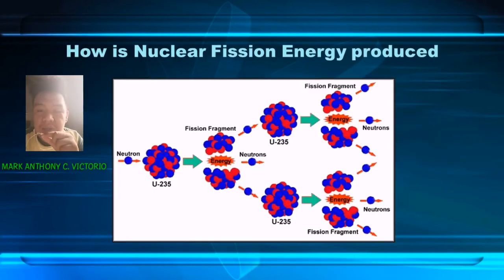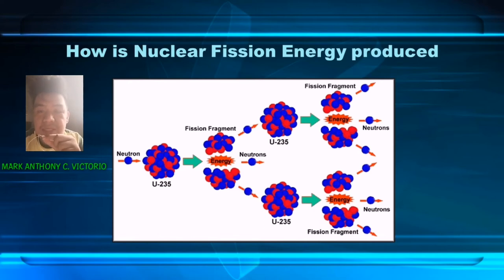How is nuclear fusion energy produced? Nuclear fusion is a nuclear reaction or radioactive decay process in which the nucleus of an atom is split into two or smaller nuclear particles. The fission process of a plant produces gamma photons and produces a very large amount of energy.